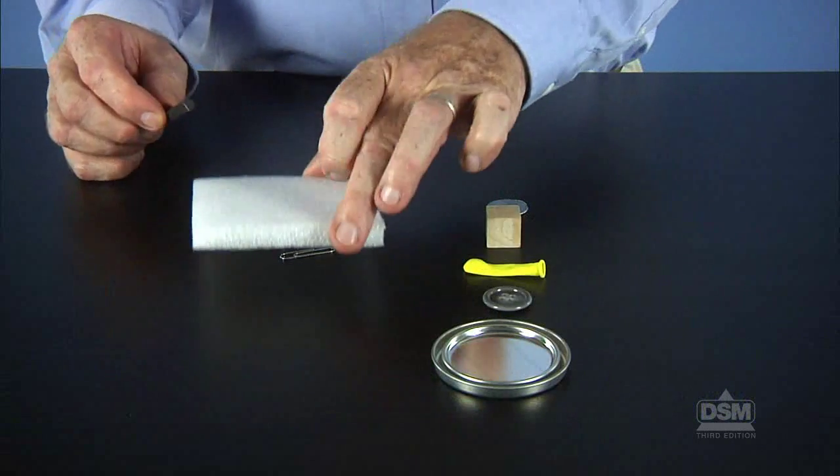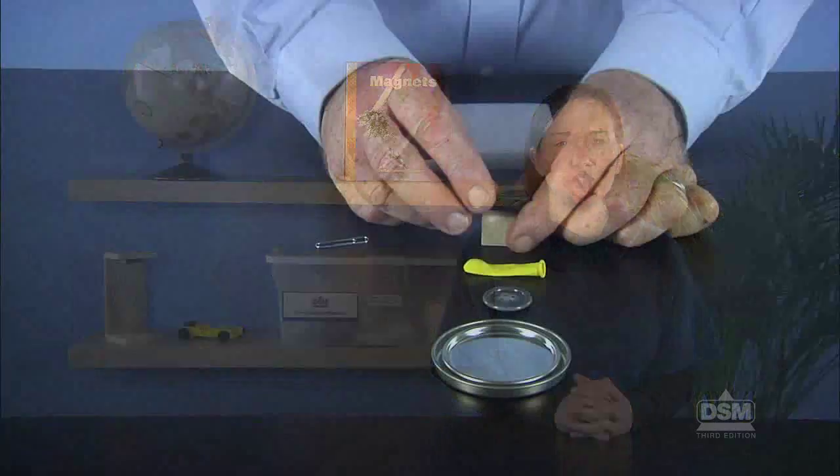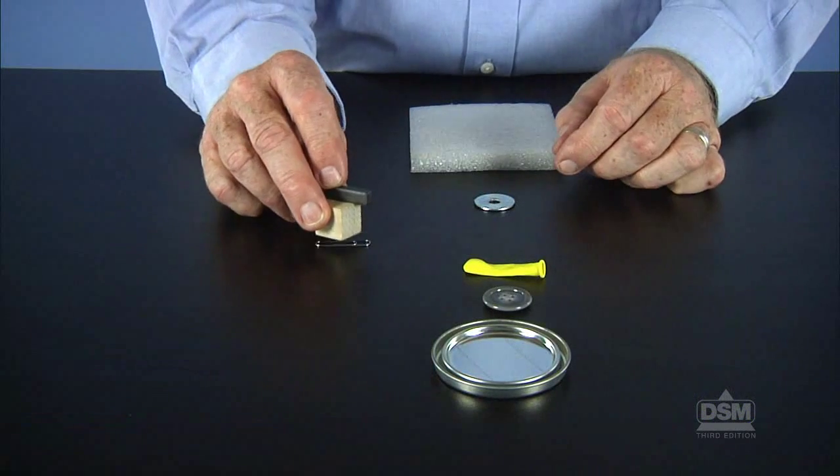Repeat this exercise, each time placing a different object between the magnet and the paper clip to see if the magnetic attraction is interrupted. Give the teams time to experiment with all of the objects from the bag to see which ones, if any, block the magnetic force. As the teams work, make sure they are sharing the investigative tasks.